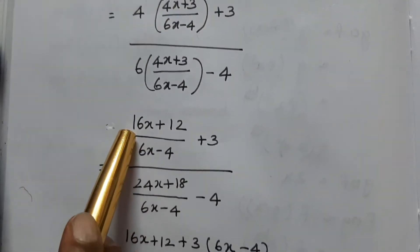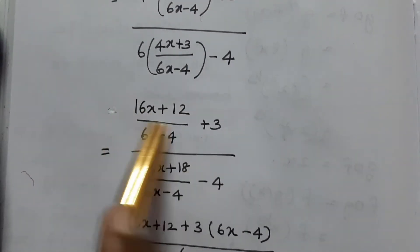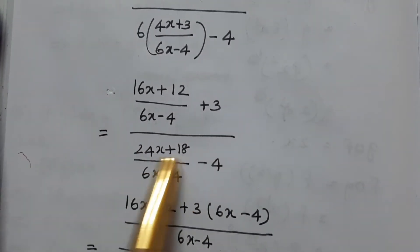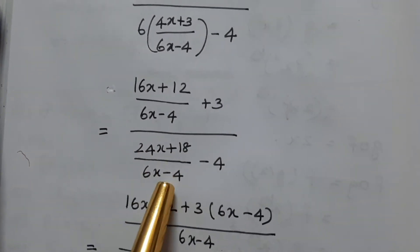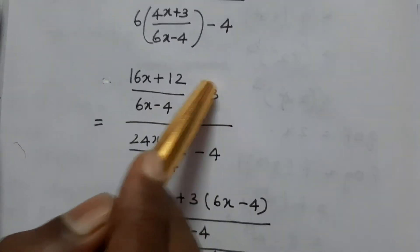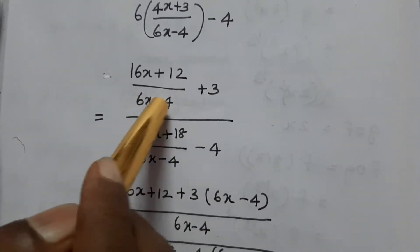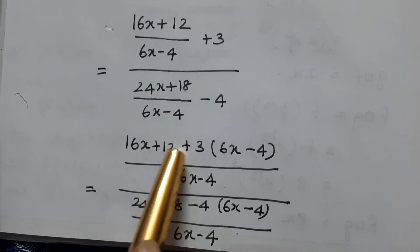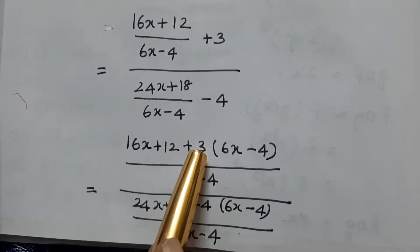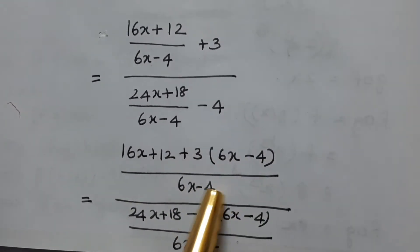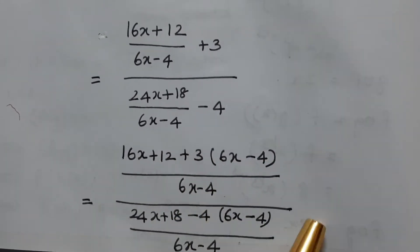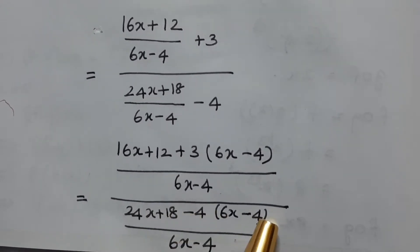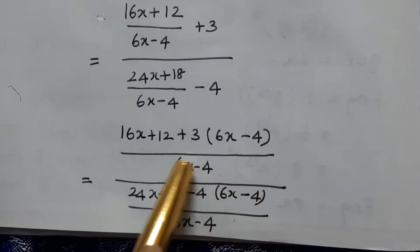Expanding the numerator: 16x plus 12 divided by 6x minus 4, plus 3 gives 24x plus 18 divided by 6x minus 4. For the denominator: 24x plus 18 minus 4 into 6x minus 4. Simplifying, we get 16x plus 12 plus 3 into 6x minus 4, divided by 6x minus 4.